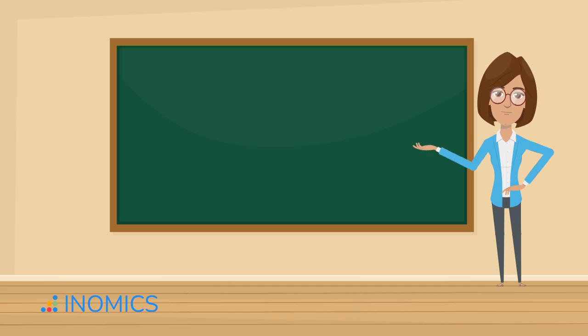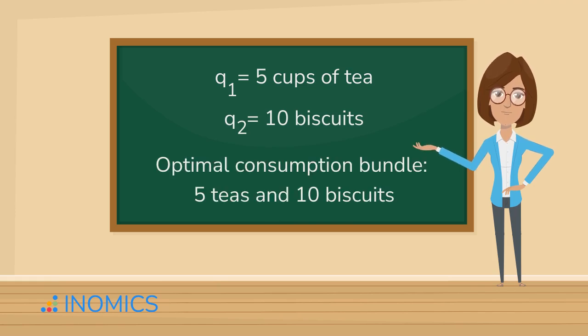Let's bring it to life with an example. Say we solve the system of equations and find that Q1 equals five cups of tea, Q2 equals ten biscuits. This tells us that under the current prices and budget, the optimal consumption bundle is five teas and ten biscuits. Plug those values back into the utility function, and voila, you've got the maximum utility.